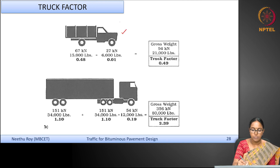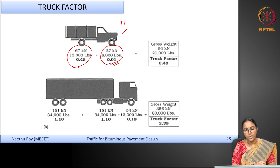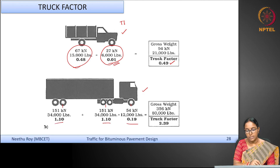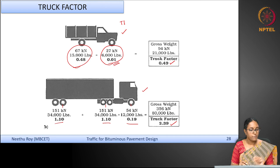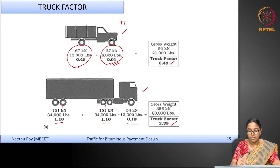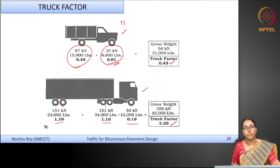Here is another example showing different truck types. For truck type T1, the front axle load is converted to an ESAL using the equivalent axle load factor, and similarly for the rear axle. Adding them and dividing by 1 (for a single truck) gives the truck factor for that class. For a truck class with three axle groups, you find the ESAL for each axle group, add them, and divide by the number of vehicles. Results show truck factors of 0.40, 0.649, and 2.39 for the three truck classes.